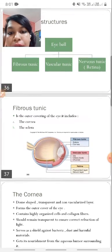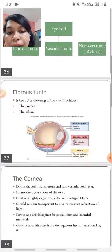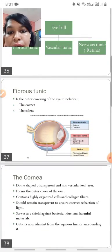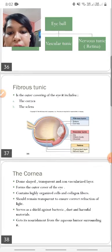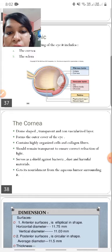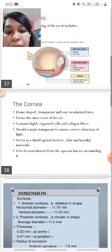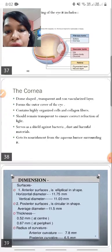So what constitutes the fibrous tunic of the eye? The fibrous tunic is the outermost layer of the eye and it is composed of sclera, which is the opaque white part, and the cornea, which is the transparent part placed anteriorly. The cornea is one of the most important structures of the eye because it is the main refractive media of the eye.